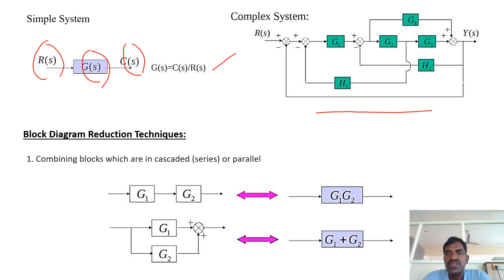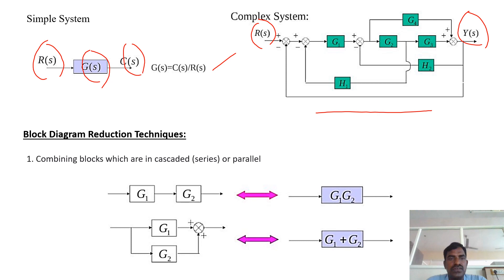For a complex system, there is more than one block — multiple blocks. Here R(s) is the input and Y(s) is the output. Coming to block diagram reduction techniques, the first step is combining blocks which are in cascade, meaning in series or parallel.